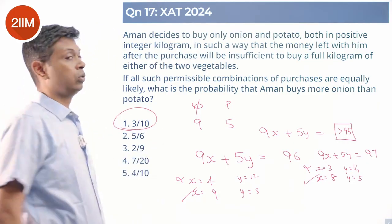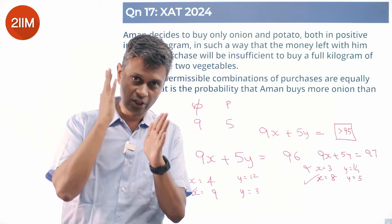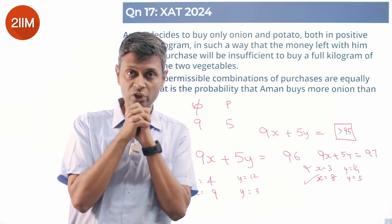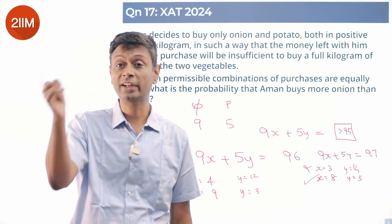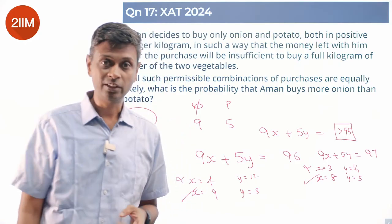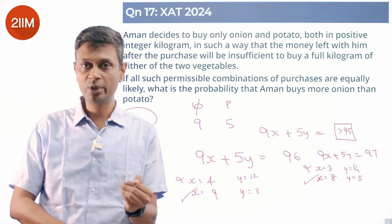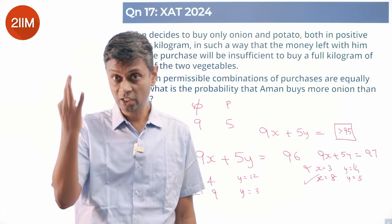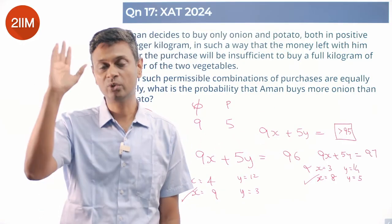This is a painful question to solve. You need to know onion price and potato price, understand that the total must be more than 95 (i.e., 96 or higher), then for 96, 97, 98, 99, and 100 individually solve and find all 10 valid combinations. Then recognize that in 3 of the 10, the number of onions purchased is more than the number of potatoes. The answer is 3 out of 10.